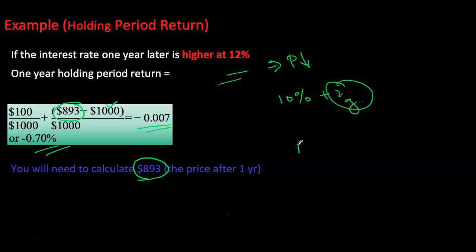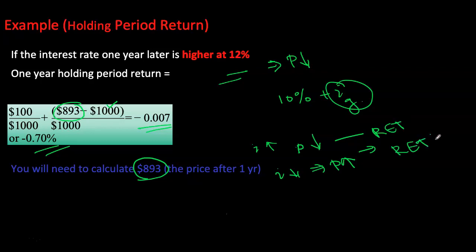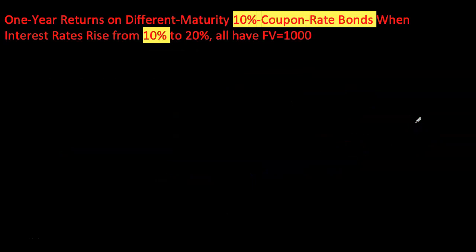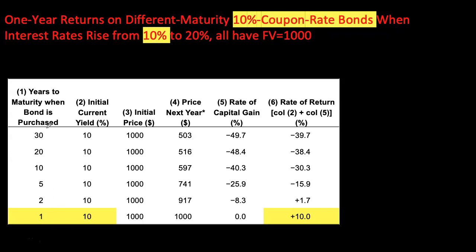Briefly: if interest rates remain constant and your price was at par initially, your price will remain at par. If interest rates go up, price goes down; if interest rates fall, prices can rise, and your overall return will depend on the rate of capital gain. Returns could drastically go up or down depending on interest rate movements. Let's look at different types of bonds all with a face value of $1,000 and a coupon rate of 10%, so a coupon value of $100, but with time to maturity varying from 1 to 30 years. Since the current yield is 10%, all bonds have an initial price of $1,000.